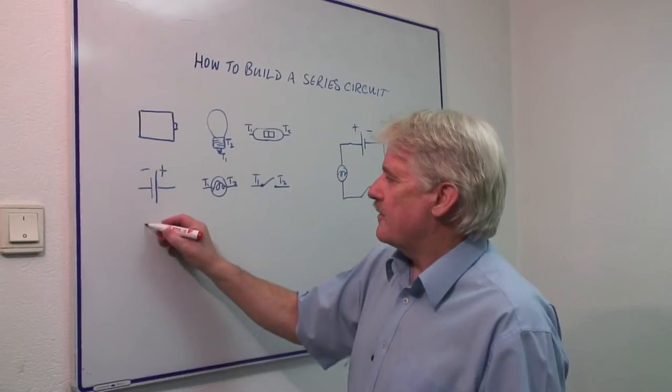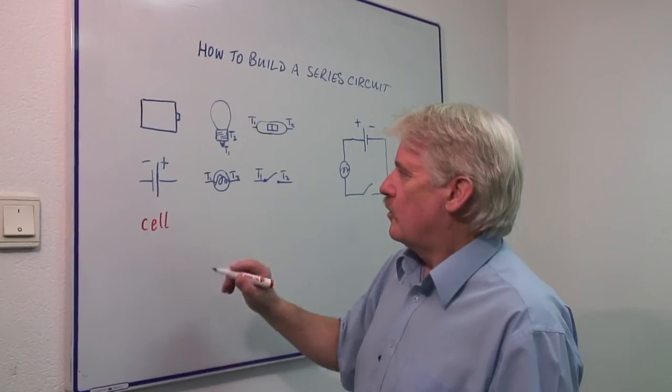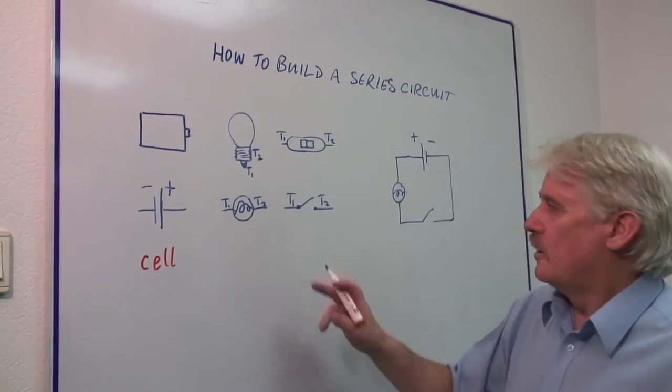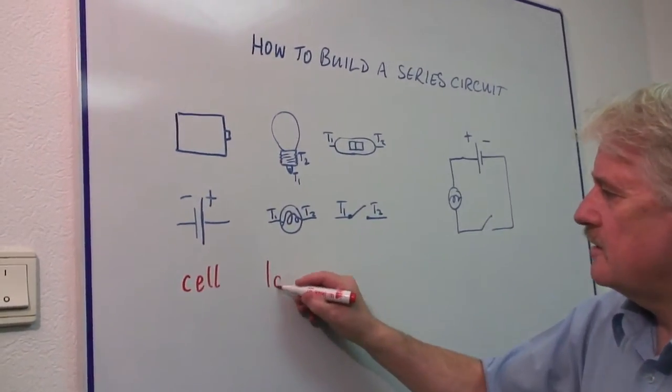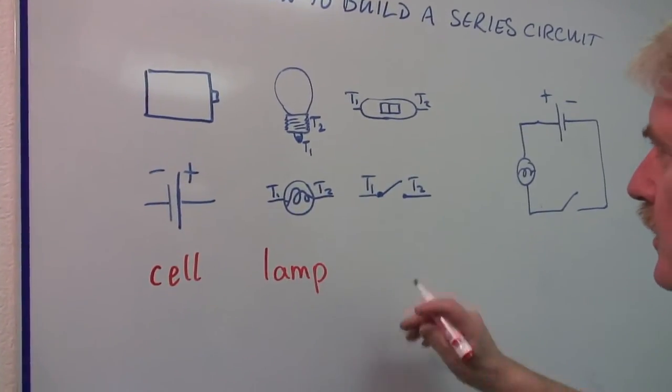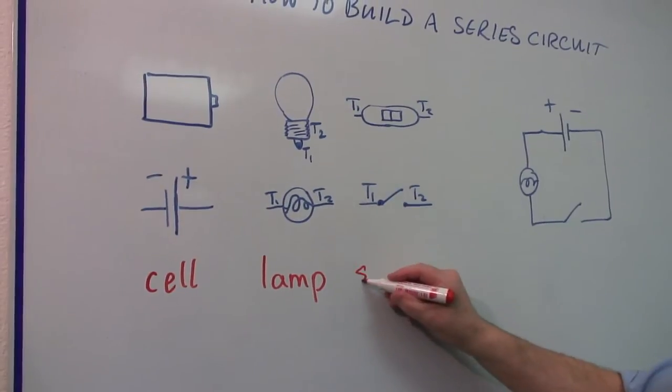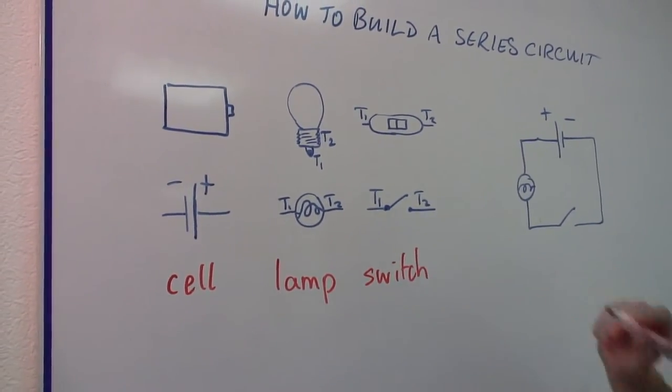Typically in the circuit we have a cell or a battery, which is a group of cells. We have a lamp of some kind, a light bulb, and obviously we would have a switch. These are the main components that we find in our electric circuits.